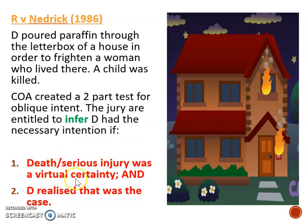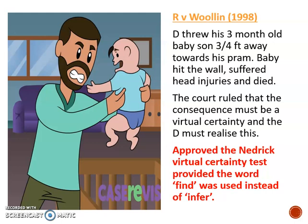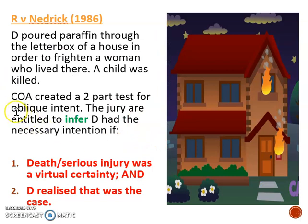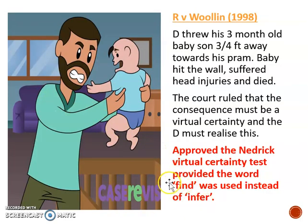The only situation where the defendant might not realize the risk would be if they were a child or mentally ill. On the same issue of oblique intent, we then had the tragic case of Woollin, where the defendant was frustrated with his baby who had colic and never stopped crying. In a moment of frustration he flung the baby, it hit the wall, suffered serious head injuries and died. Woollin approved the Nedrick test but changed one word: replacing 'infer' with 'find' — so the jury are entitled to find the necessary intention rather than infer it. The test itself remained the same.